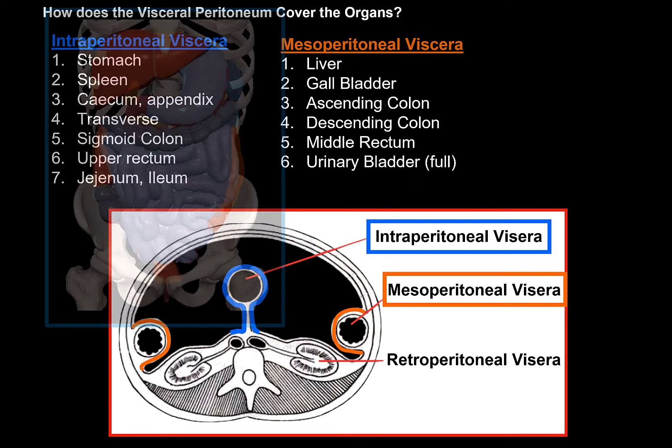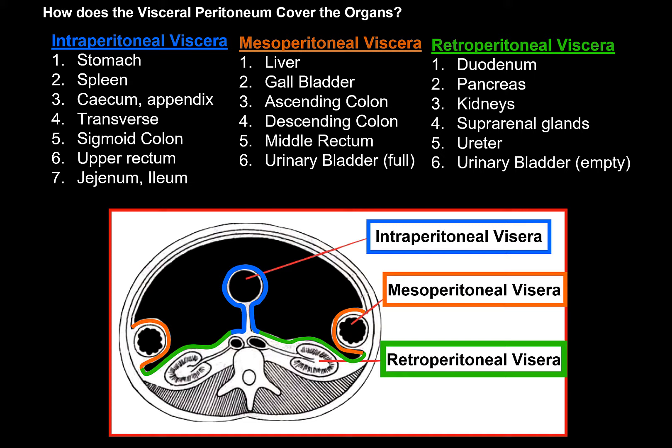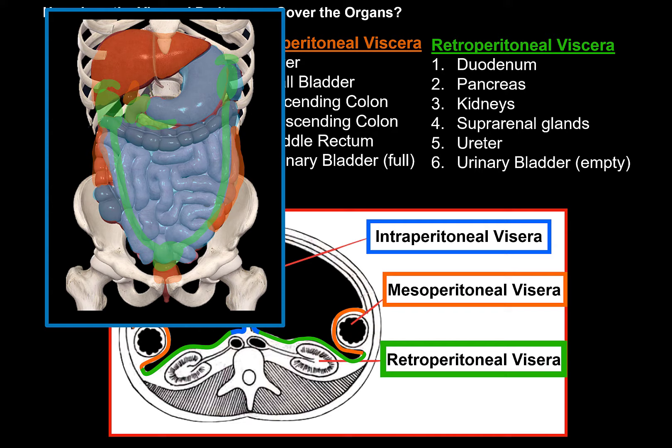Then we have the retroperitoneal organs. These are covered by the visceral peritoneum from only one side. They include the duodenum, the pancreas, the kidneys and their suprarenal glands, the ureter, and the urinary bladder when it's empty.